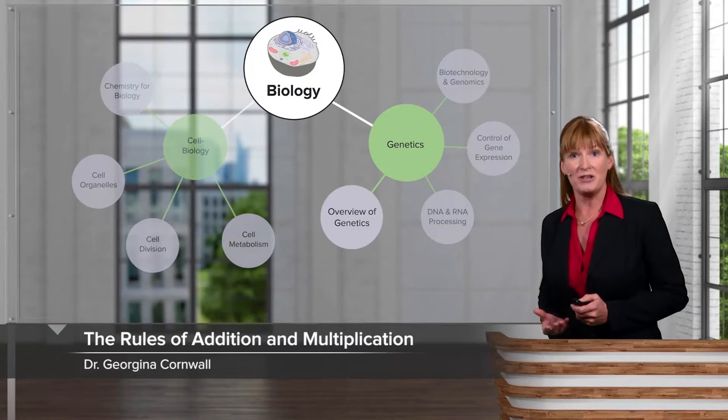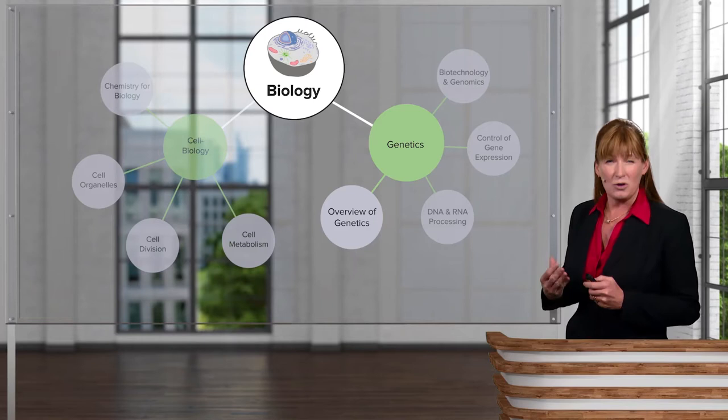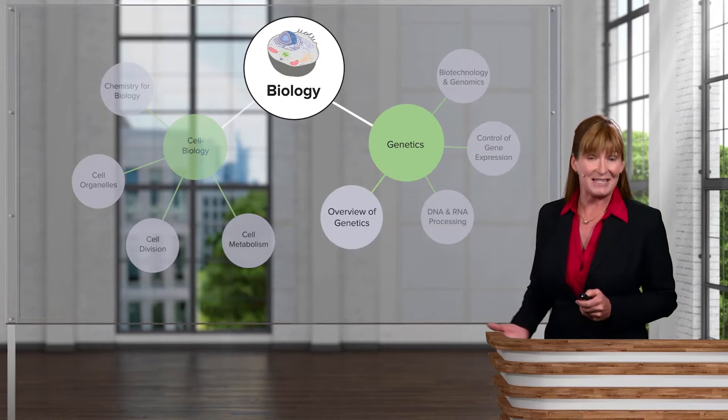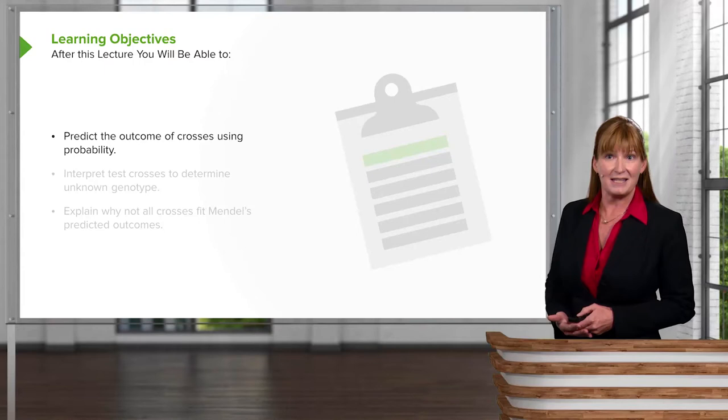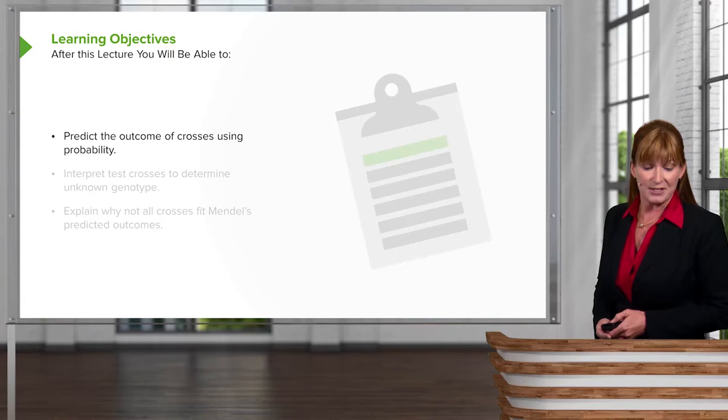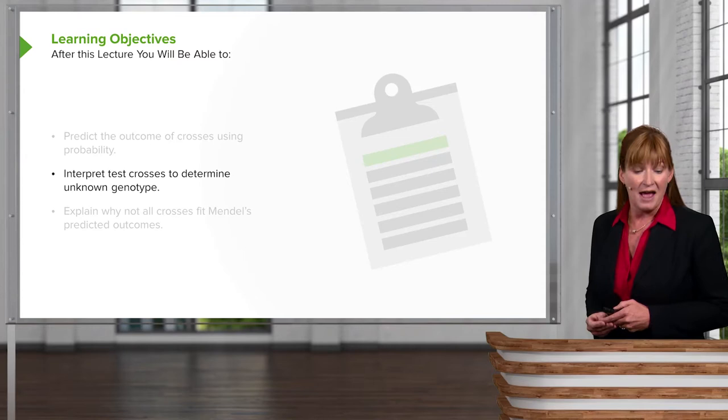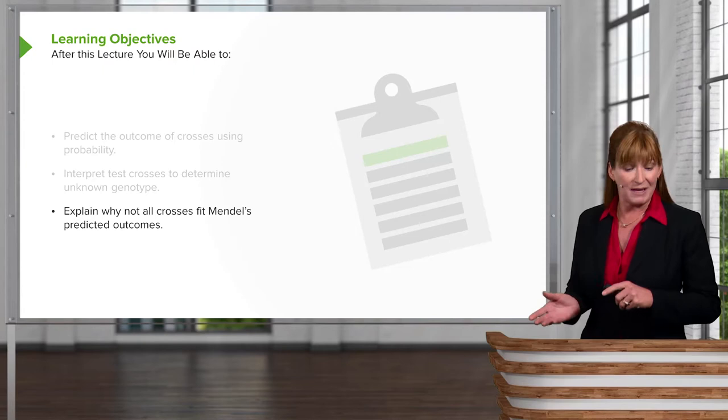In this lecture, we'll continue our investigation of classical genetics by looking a little bit beyond Mendel. We'll be looking at non-Mendelian inheritance patterns that don't quite exhibit the expected ratios. This isn't that Mendel was wrong; they're just extensions of his concepts. By the end of this lecture, you'll be able to predict the outcomes of mono and dihybrid crosses using probability methods, interpret test cross data to determine unknown phenotypes, and explain why not all crosses exhibit Mendel's predicted phenotypic outcomes.